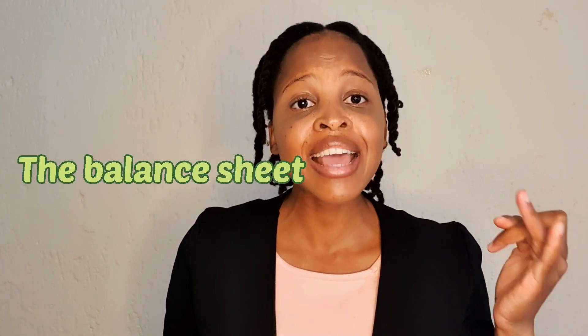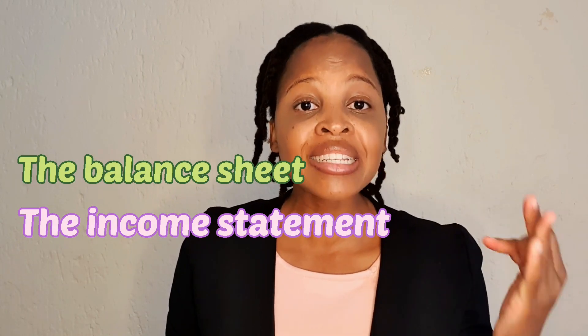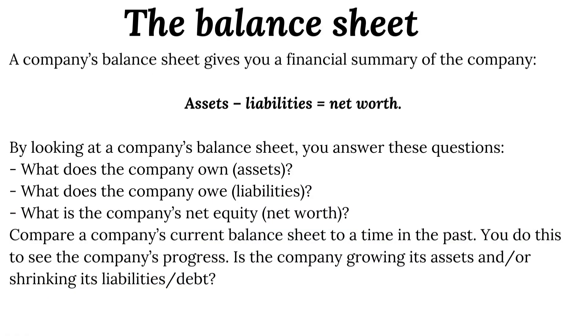To choose stocks to invest in, you need to use basic accounting. Investors look at a company from a value perspective to judge if it is worth buying. The most important things to look at are the balance sheet, the income statement, and financial ratios. A company's balance sheet gives you a financial summary of the company using the following formula: assets minus liabilities equals net worth.